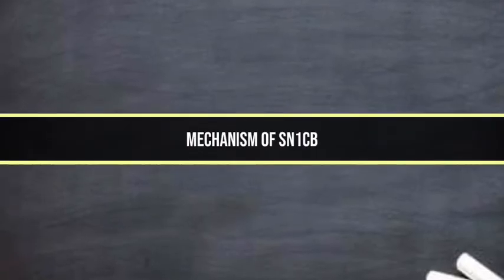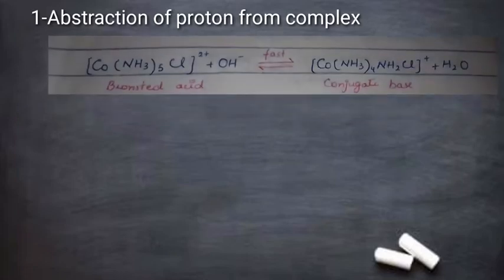The mechanism involves three steps. Step 1 is abstraction of a proton from the complex. When a nucleophile attacks the complex, the complex behaves as a Brønsted acid. It releases H⁺, forming water and a conjugate base. The oxidation state is converted from +2 to +1. This reaction is reversible and fast.